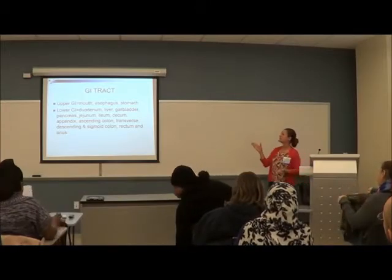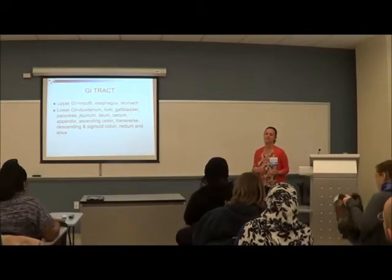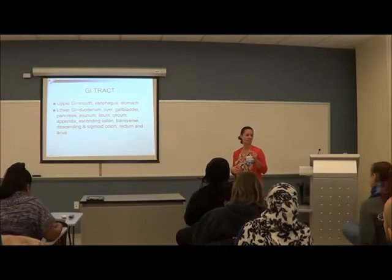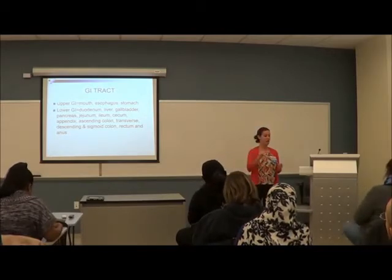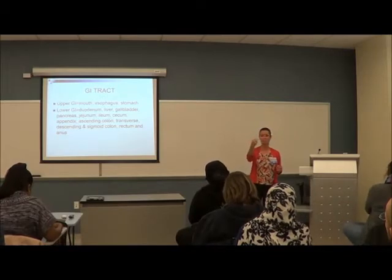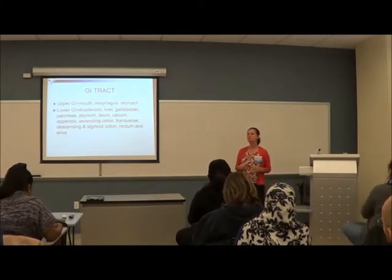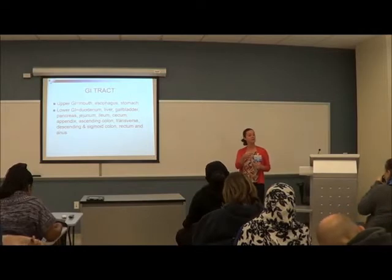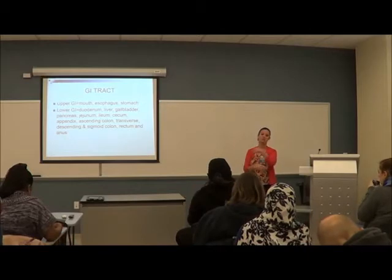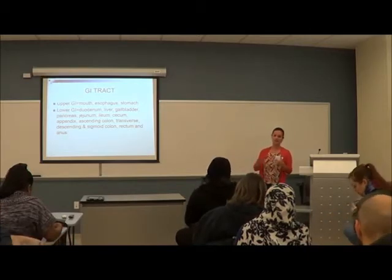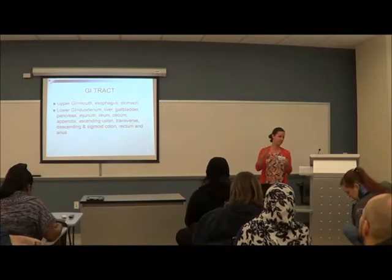Then you go to the esophagus. At the bottom of the esophagus is the lower esophageal sphincter, also known as the cardiac sphincter, which is at the top of the stomach. It's a circular muscle that helps keep food in the stomach. The vagus nerve, cranial nerve number 10, innervates that sphincter.